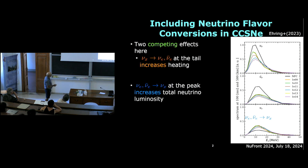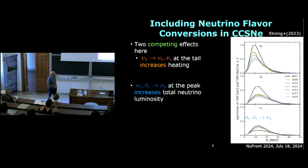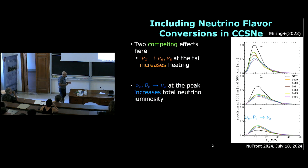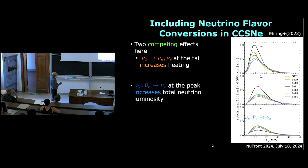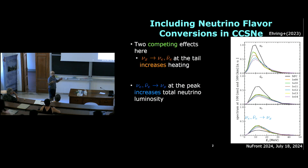This conversion channel — nu_x to nu_e and nu_e-bar — can increase the heating rate, which can help the explosion. However, there is another competing effect: at lower energies, nu_x is more plentiful than electron neutrinos, so the dominant conversion channel becomes nu_e and nu_e-bar to nu_x. These leave the supernova environment more easily due to weaker interaction with matter, increasing total neutrino luminosities, which in turn increases the contraction rate of the proto-neutron star and shock wave — not good news for the explosion.